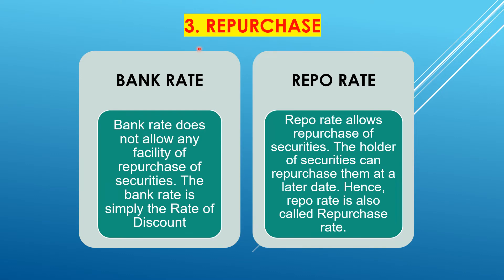Next: repurchase. Bank rate does not allow any facility of repurchase of securities — the bank rate is simply the rate of discount. Repo rate allows repurchase of securities; the holder of securities can repurchase them at a later date. Therefore, repo rate is also called the repurchase rate. When commercial banks pledge the securities with RBI, in future, when they have excess funds, they can go to the central bank and repurchase those securities.